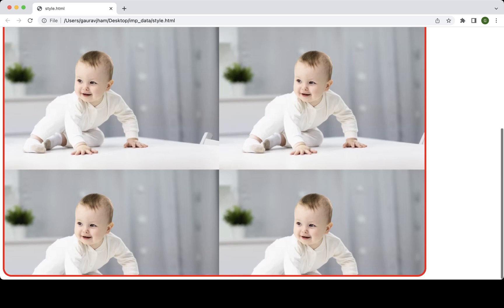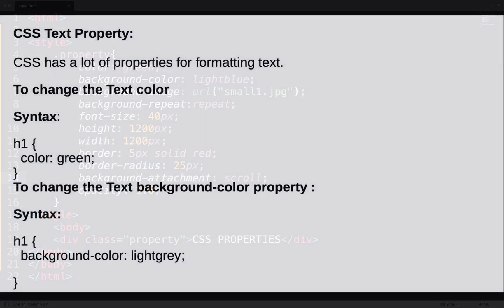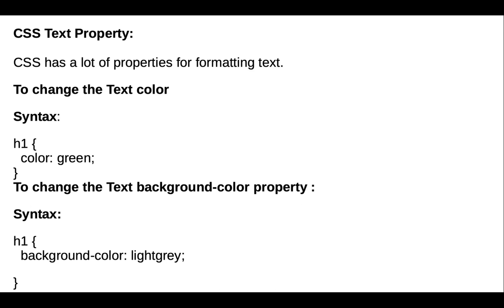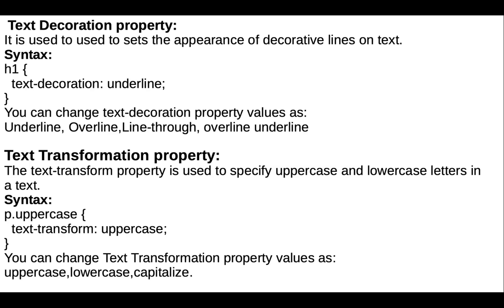Next we discuss more properties — CSS text properties. CSS has a lot of properties for formatting text. To change the text color we use the color property. To change the text background color we use background-color. To change text alignment — right, center, justify, or left — we use the text-align property. The text-decoration property is used to set decorative lines on text, such as underline, overline, or line-through.